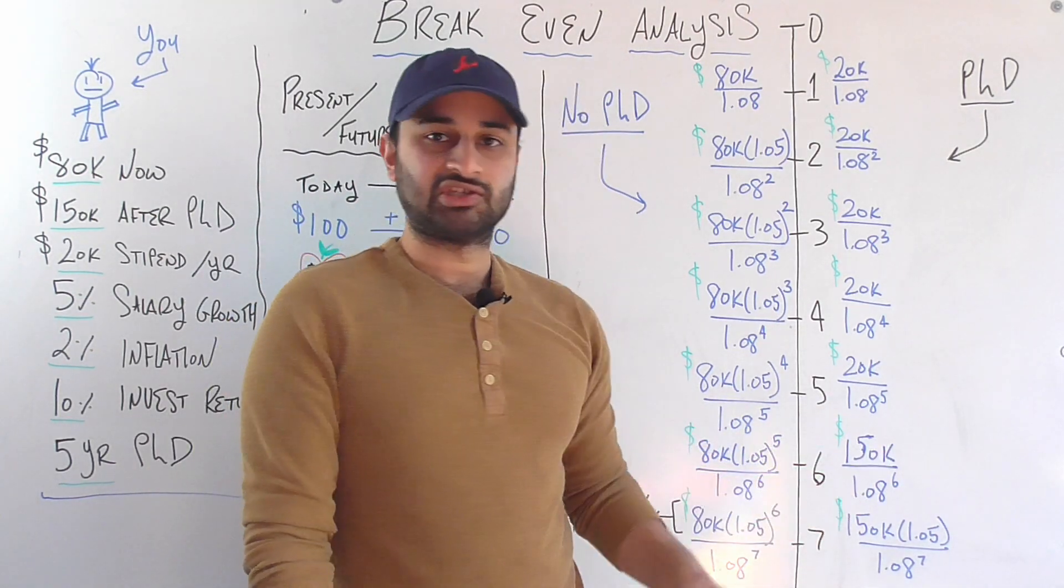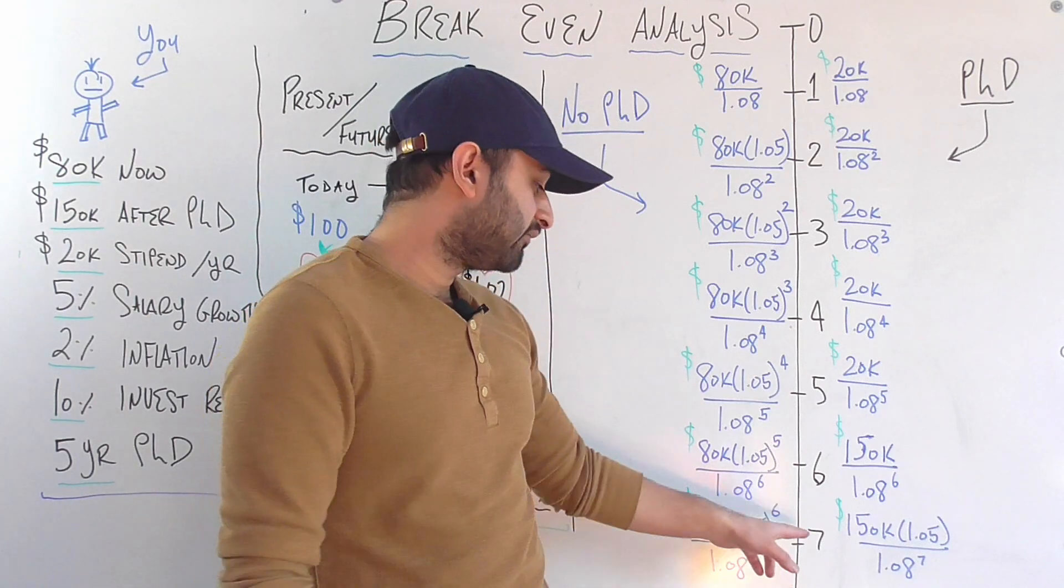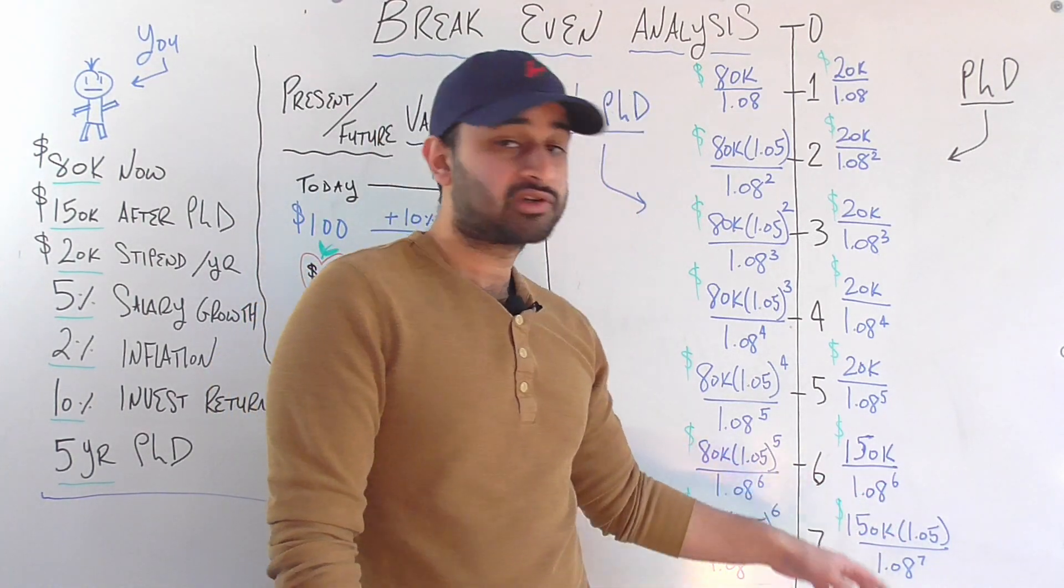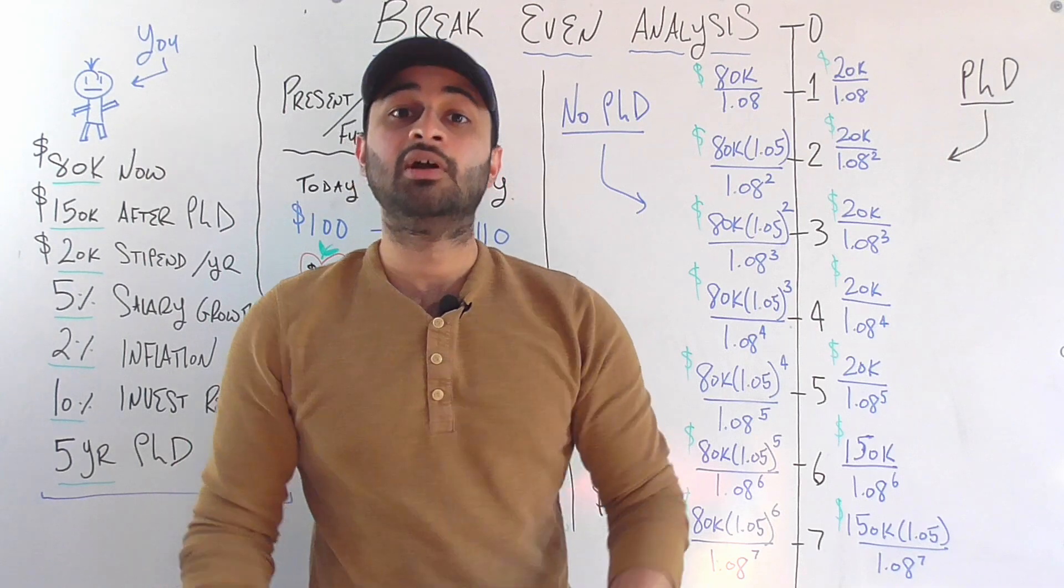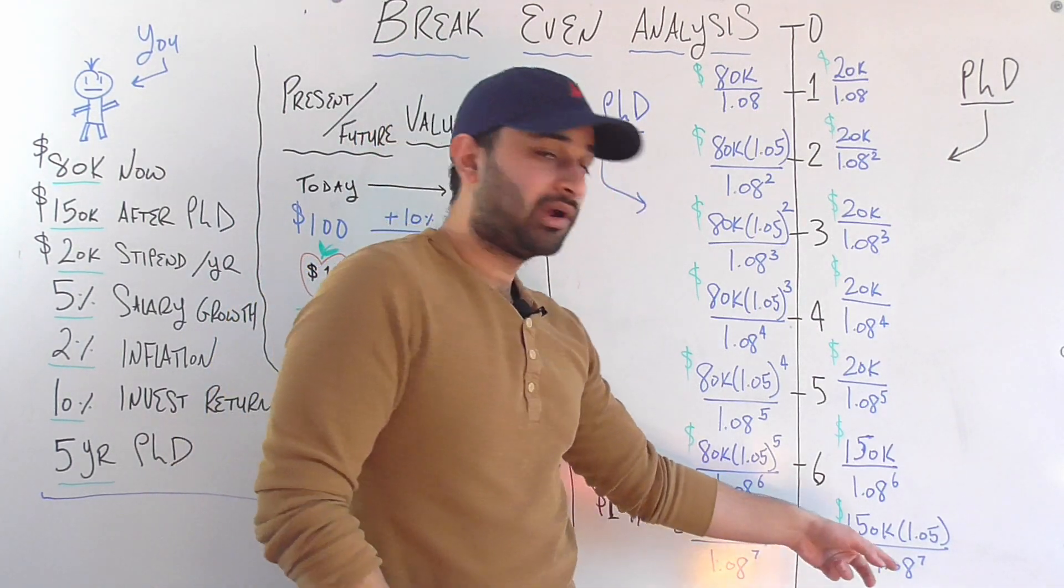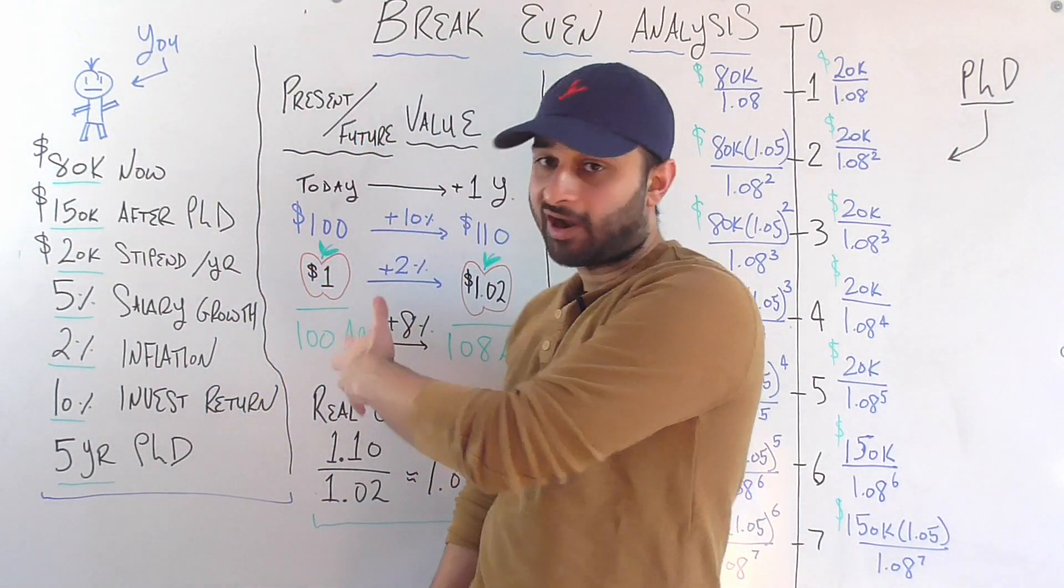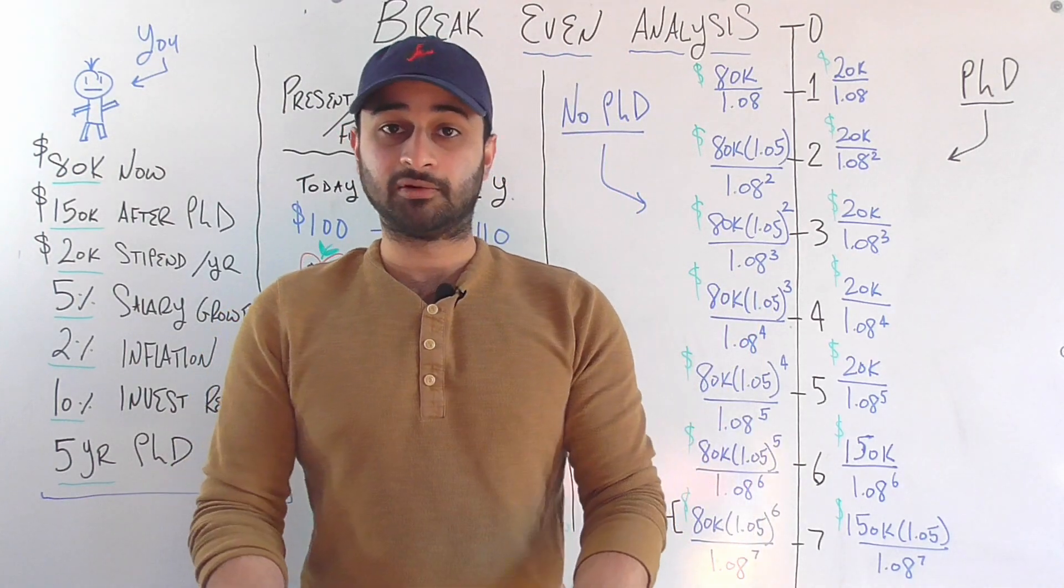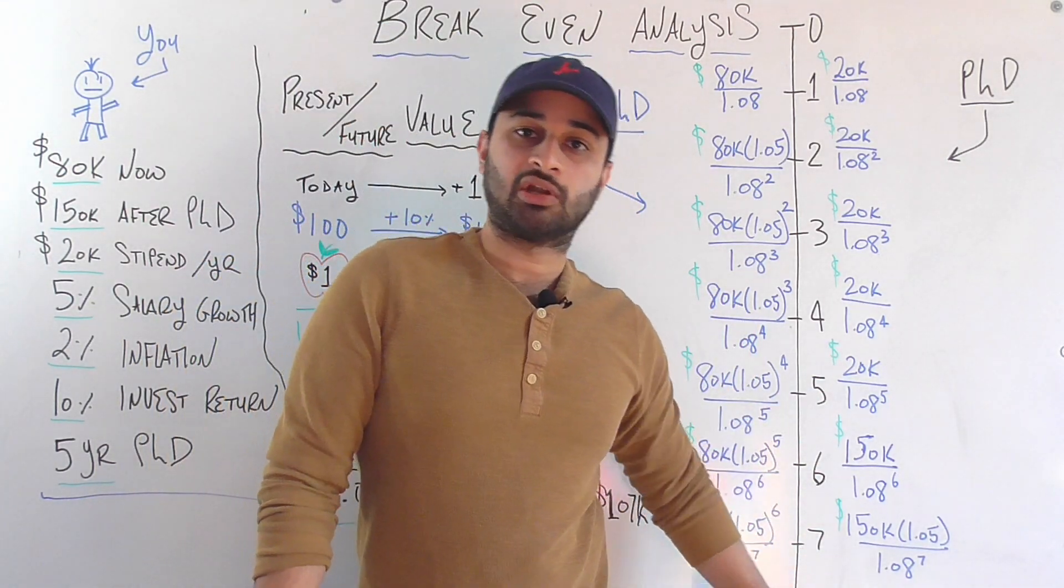And then you start seeing raises on that. So for completeness at seven years, you're going to see $150,000 times a 5% raise. And of course, divided by 1.08, which is the purchasing power factor, to the power of seven. And we can also just continue this pattern as long as we would like.